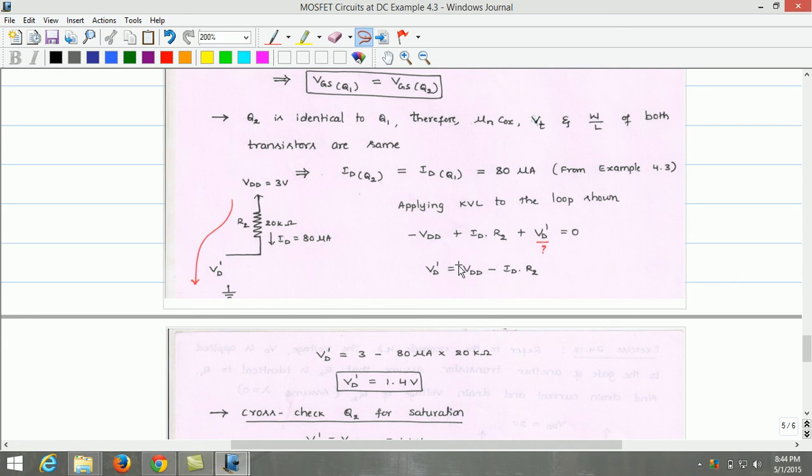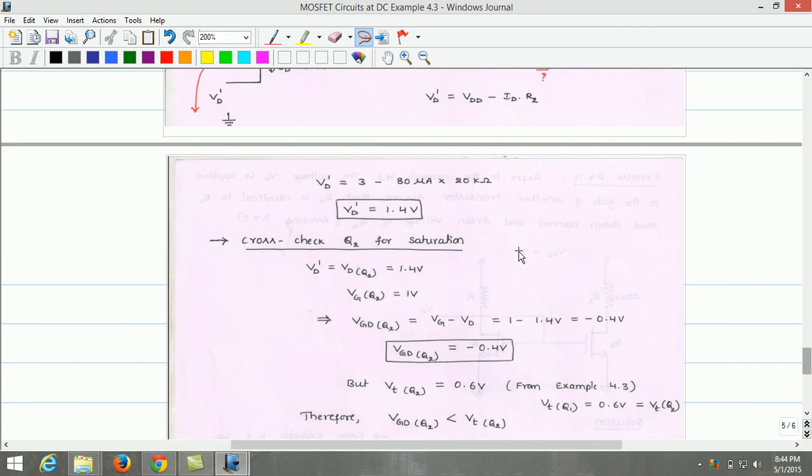On simplification, we obtain Vd' equals Vdd minus Id R2. We get Vd' as 1.4 volts.